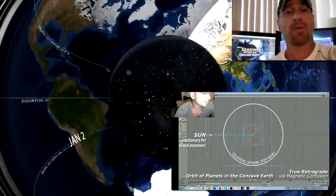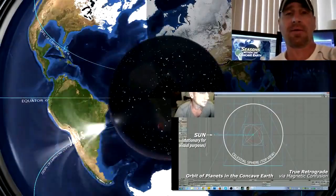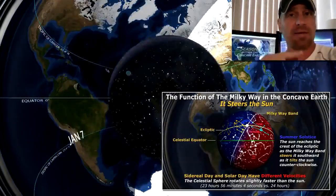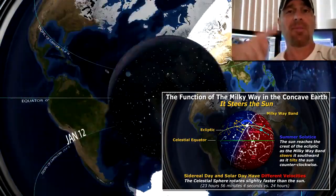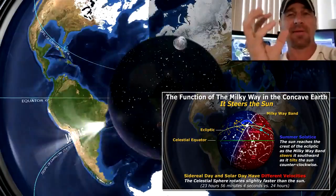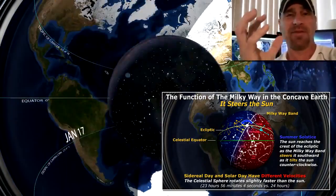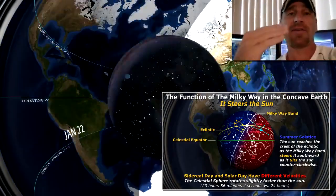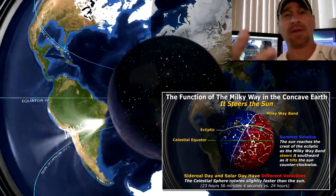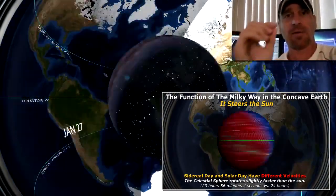The Milky Way band, it's a band, not a spiral galaxy. It's actually a literal band that separates the celestial sphere into two different hemispheres, two different magnetically influenced hemispheres that actually steer the Sun. So the Milky Way band has a function.